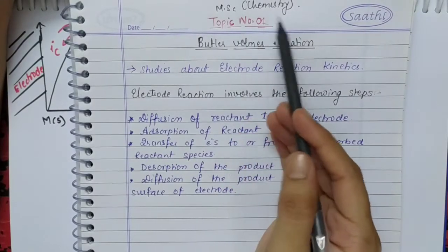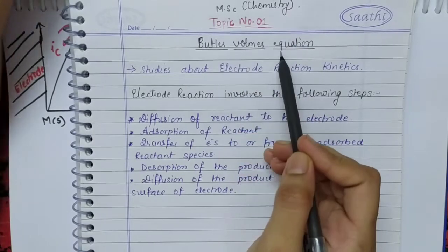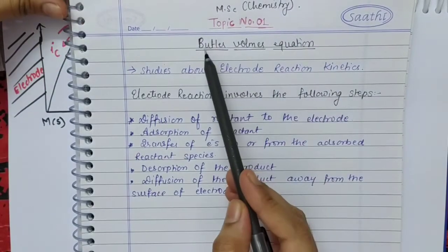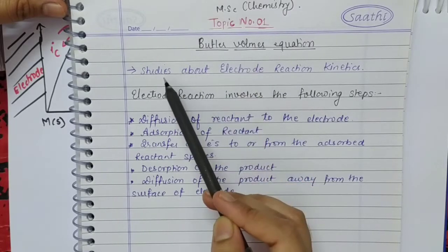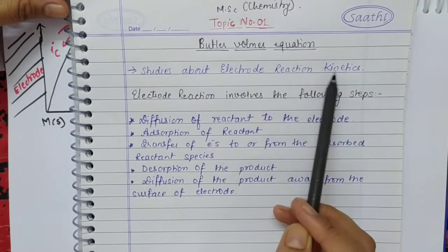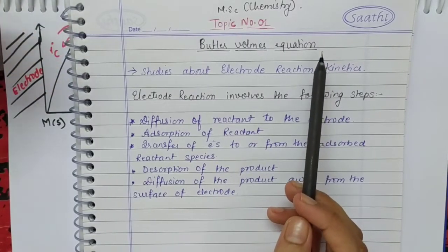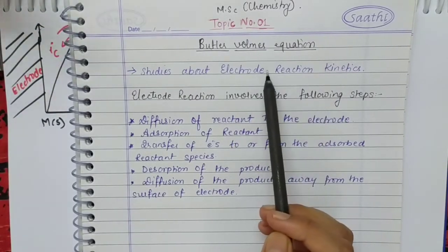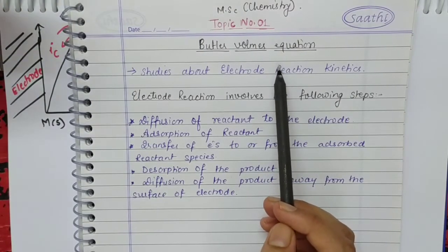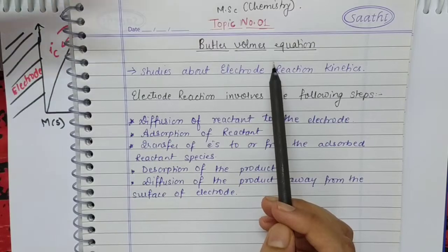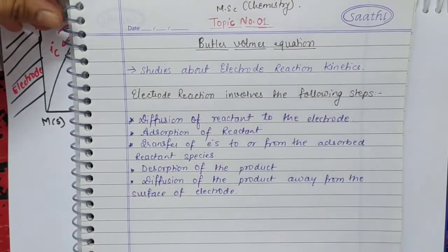This is our first topic of Masters in Science Chemistry, which is the Butler-Volmer Equation. The Butler-Volmer Equation studies electrode reaction kinetics — meaning whatever reactions occur between electrodes and electrolyte, and what kinetics are involved: the rate of charge transfer, the rate of current, and all reaction kinetics studied through the Butler-Volmer Equation.